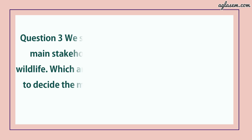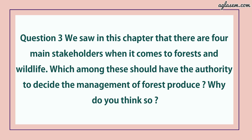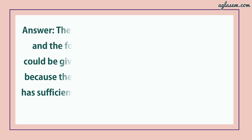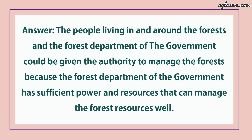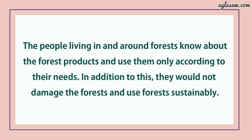Question number 3 says: we saw in this chapter that there are 4 main stakeholders when it comes to forest and wildlife. Which among these should have the authority to decide the management of forest produce? Why do you think so? The people living in and around the forest and the forest department of the government could be given the authority to manage the forest, because the forest department has sufficient power and resources to manage forest resources well. The people living around the forest know about the forest products and use them only according to their needs, and they would not damage the forest and use it sustainably.